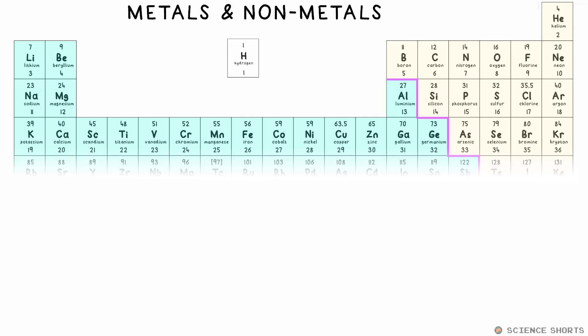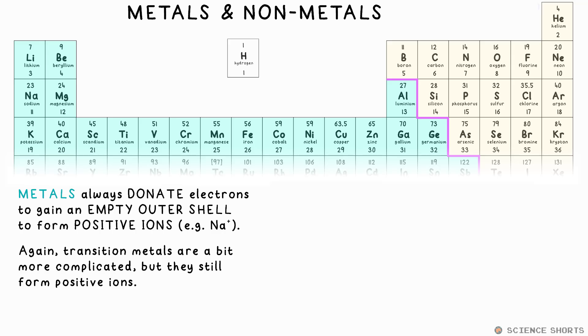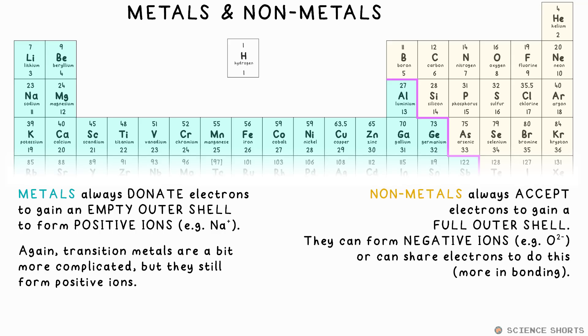The periodic table can be split up into different bits. For example, everything to the left of this staircase is called a metal. Metal atoms always donate electrons when they bond to gain an empty outer shell of electrons. Again, transition metals are weird, but we don't think about their shells for now. To the right of the staircase, non-metals. They always accept electrons to gain a full outer shell. The column an atom is in is called its group. It tells you how many electrons an atom has in its outer shell. Again, the transition metals work in a really weird way, so they don't get their own groups. In fact, it turns out this is because they can donate a different number of electrons, depending on what they're bonding to.